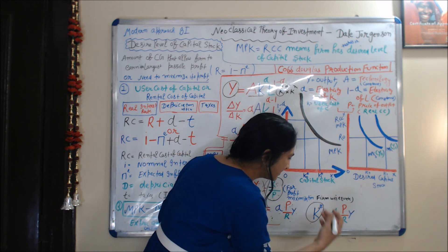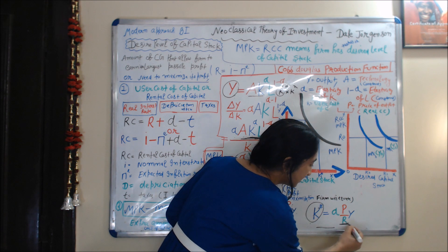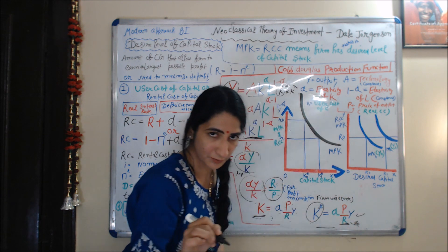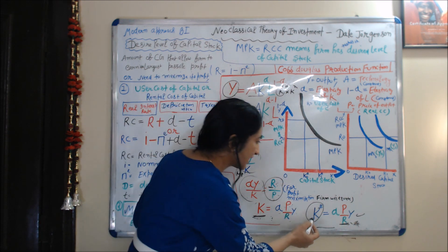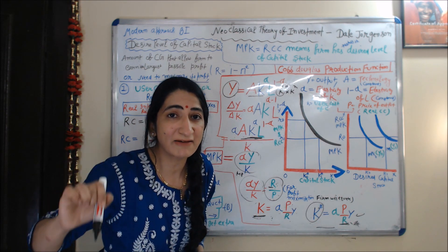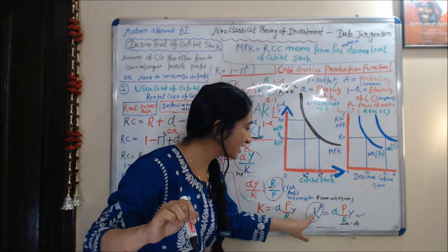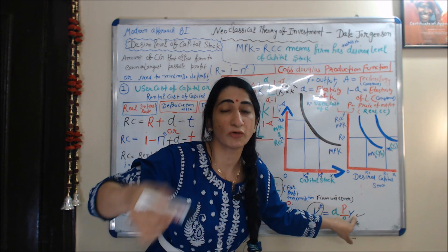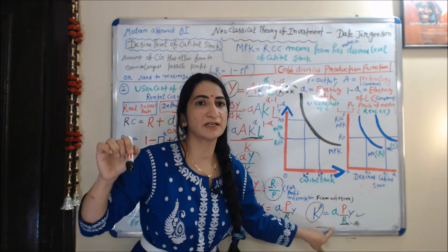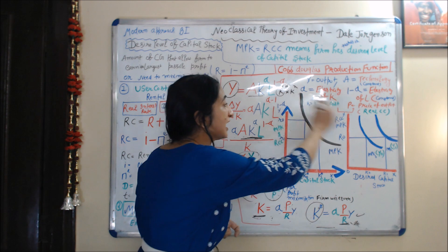This equation shows that our desired level of investment has an inverse relation with the rental cost of capital R, and a direct relation with output Y. When rental cost decreases, desired investment increases; when output increases, desired capital stock also increases.